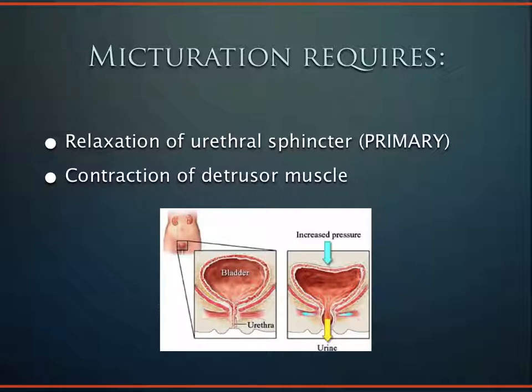The term micturition — a fancy word meaning to urinate or void the bladder — occurs through primarily urethral relaxation and secondarily contraction of the detrusor muscle. After a patient voids, there should be little or no urine left. The amount remaining is termed the post-void residual, or PVR.